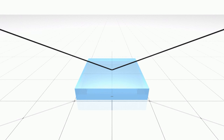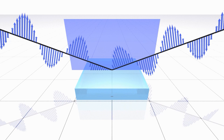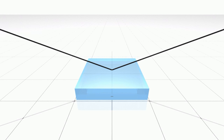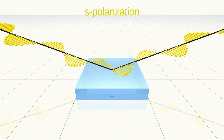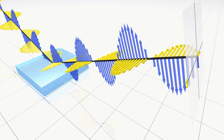Now we consider light reflection on a sample. When light is reflected by samples at oblique incidence, the incidence angle theta becomes important. The plane containing the incident and reflected waves defines the plane of incidence. The linear light polarization oscillating parallel to the plane of incidence is called p-polarization. In contrast, when the electric field is oscillating perpendicular to the plane of incidence, such light polarization is called s-polarization. The polarized light reflection on samples can always be described by p- and s-polarizations.